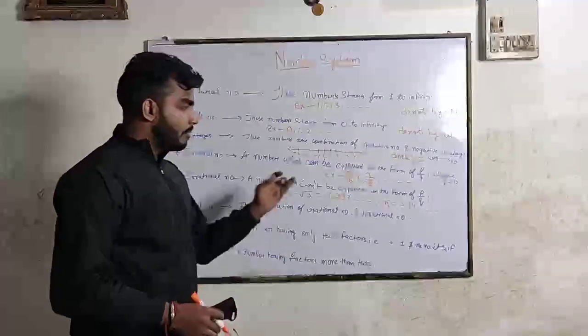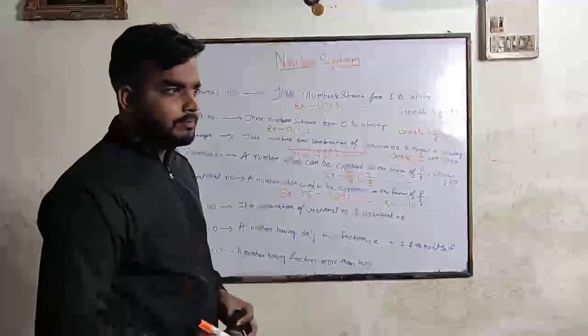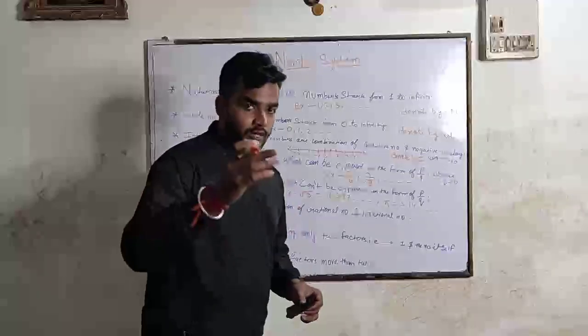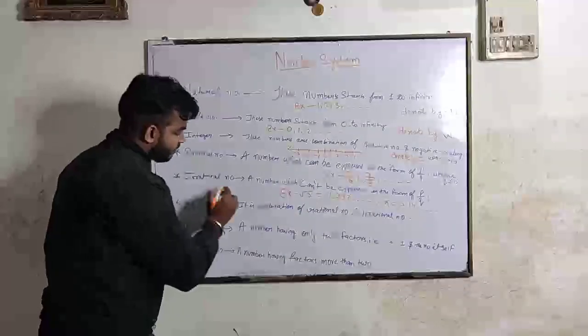Example: under root 3, 5, under root 5, under root 8. But under root 9 is not an irrational number.